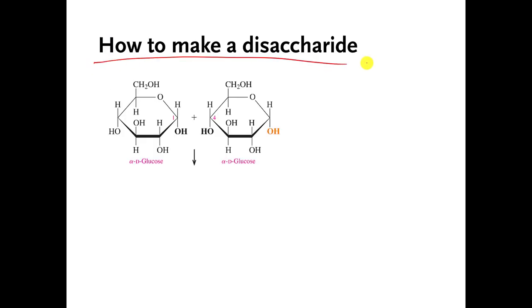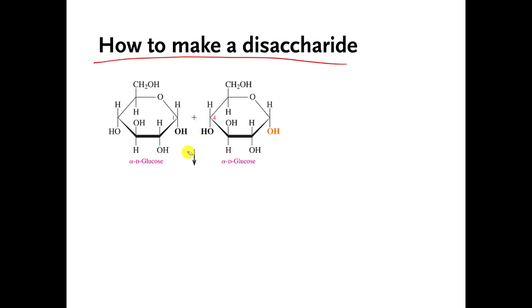So, how to make a disaccharide — this is just one specific example, but it's generally true. This is a glucose molecule here, and this is another glucose molecule over there. Suppose these two molecules are bouncing around in one of your cells and your cell wants to connect them to make a disaccharide. What it can do: there's a carbon here and a carbon here — it can rip out that alcohol functional group, that OH, from one glucose molecule, and rip out a hydrogen from a neighboring glucose molecule. I can use those to make water — two H's and an O — so I rip them out and make water. They're gone.